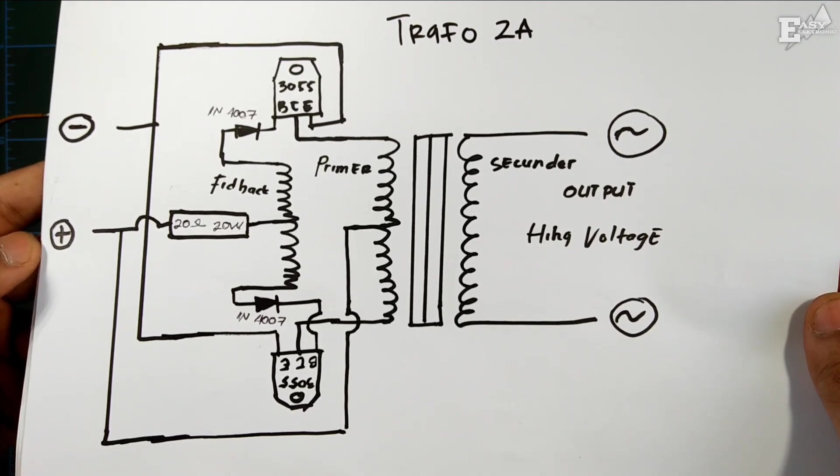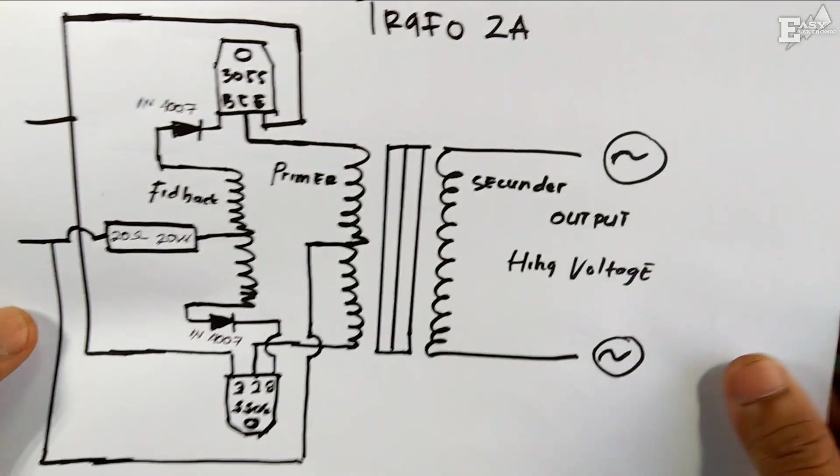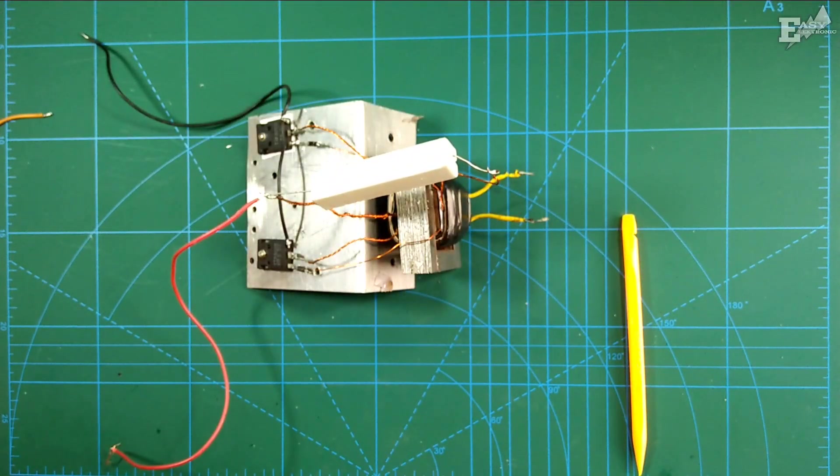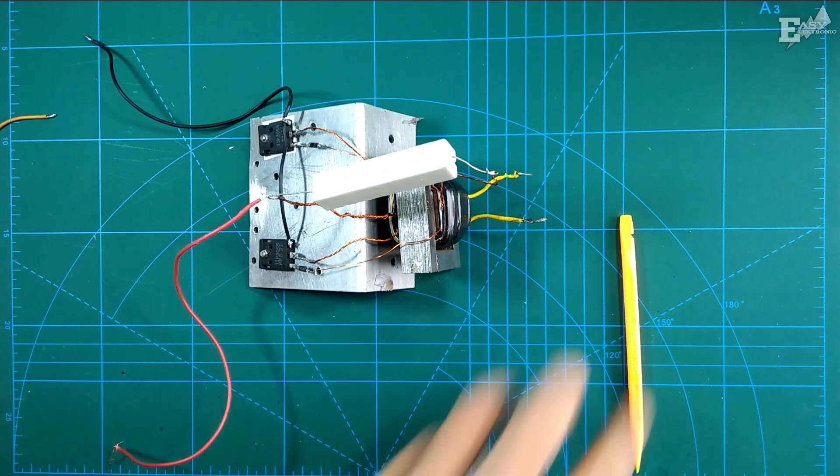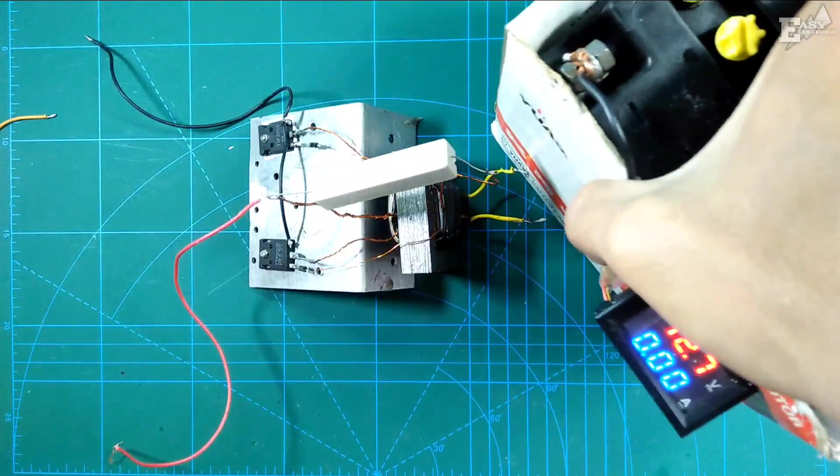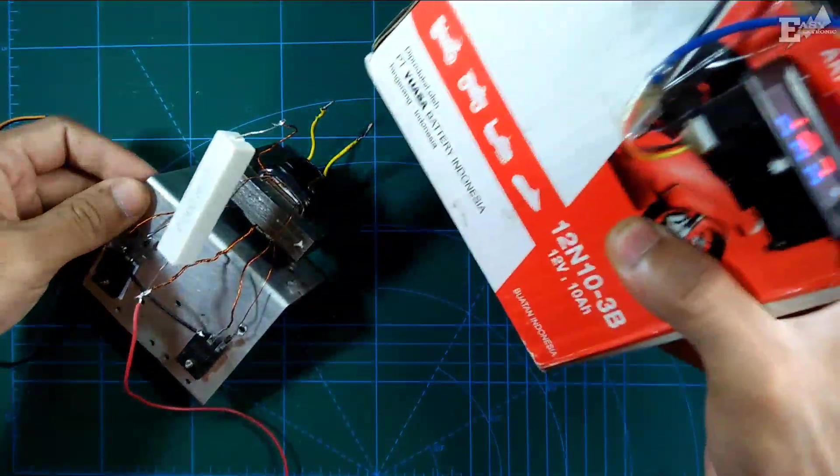Oh yes, and for the transistor, I suggest if you're using it for fishing, you must use D718 or something even larger. You can use 4 sets or 3 sets so the results are more maximal.